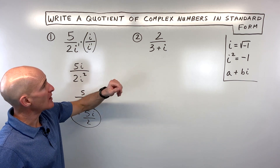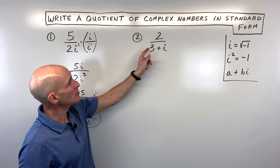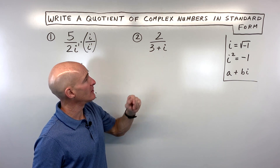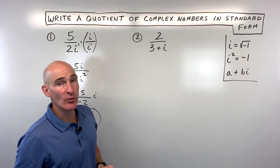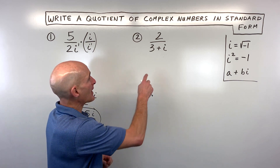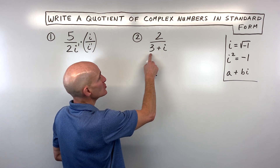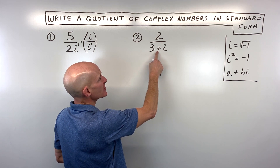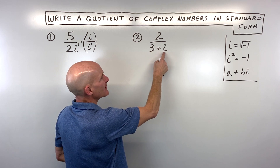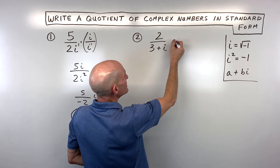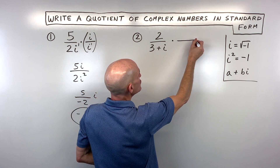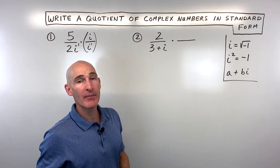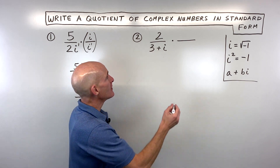For example number 2, we have 2 divided by the quantity 3 plus i. When you have a binomial like this — two terms separated by plus or minus — we're trying to get rid of that i in the denominator, so what we do is use a technique called multiplying by the complex conjugate.